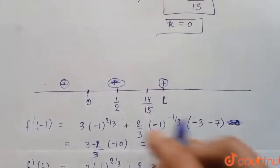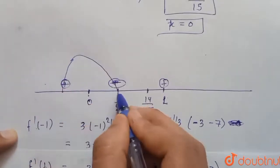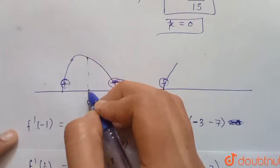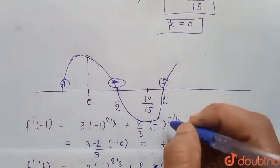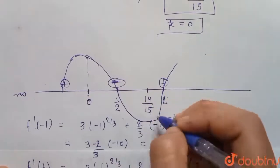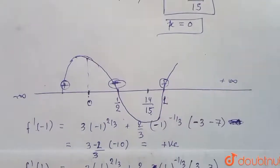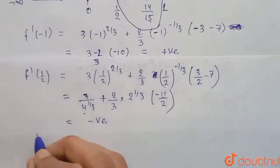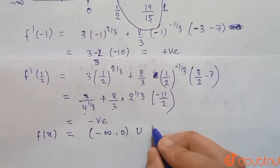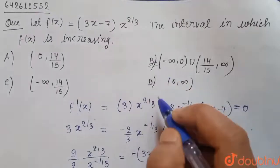So the graph of f(x) has a local maximum at x = 0 and a local minimum at x = 14/15. Therefore, f(x) is increasing on (-∞, 0) and on (14/15, +∞). The interval of increase is (-∞, 0) ∪ (14/15, +∞).